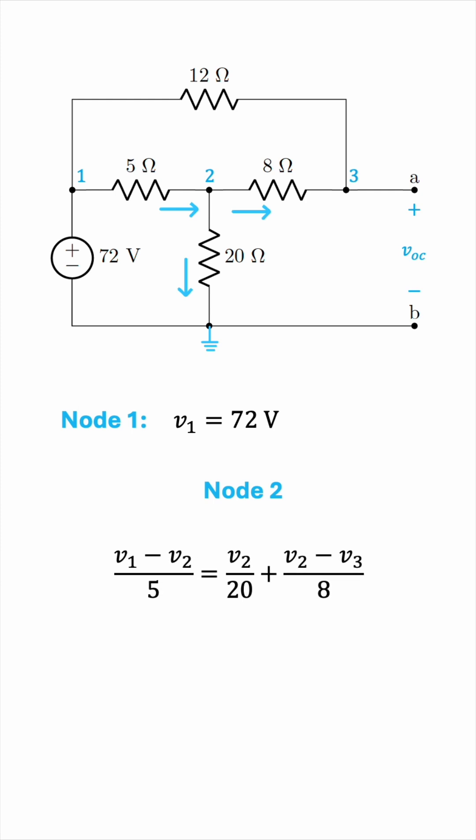Let's clear the denominators by multiplying both sides by the least common multiple of the denominators, which is 40. This gives us the following equation. And now we can add like terms arriving at this final form for the equation at node 2: 8V1 minus 15V2 plus 5V3 equals 0.